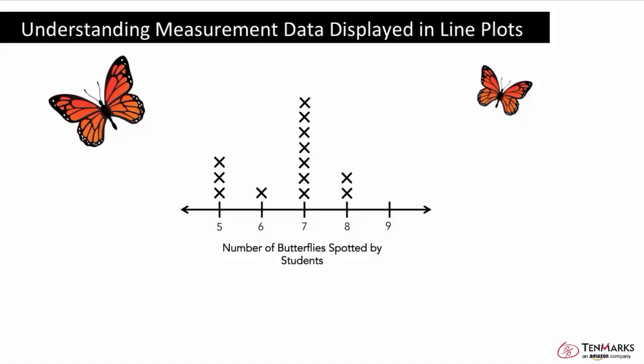In this lesson, you'll learn how to understand measurement data shown in line plots. When data is shown on a number line like this, it's called a line plot. The X represents one student who found a given number of butterflies. The numbers below represent the units of measure — here, it's the number of butterflies.